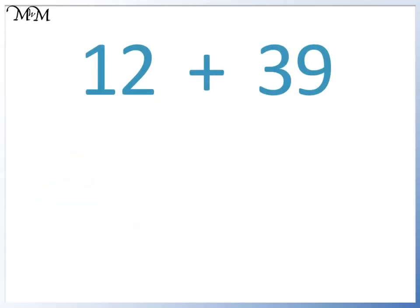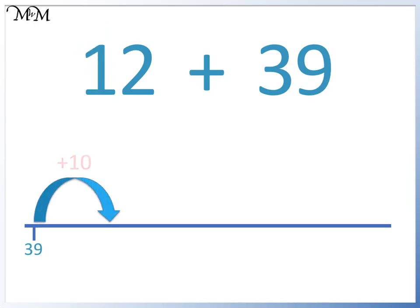Here is 12 plus 39. 39 is the biggest number. We make a jump of 10. We go from 39 to 49, and 2 jumps of 1. We go from 49 to 50, and from 50 to 51.